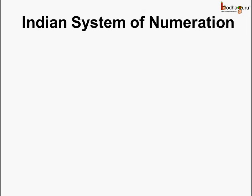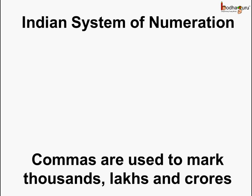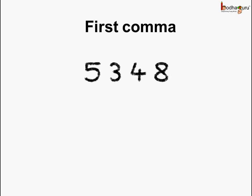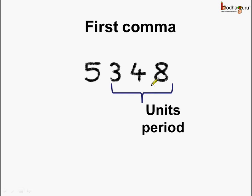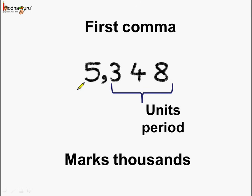In the Indian system of numeration, we use commas to mark thousands, lakhs and crores. So a comma is used to mark how many thousands there are, how many lakhs there are, and how many crores there are. The first comma comes after the units period, which comprises the ones, tens and hundreds positions. It marks the thousands. Here we have five thousands, and we can read the number as five thousand three hundred and forty-eight.